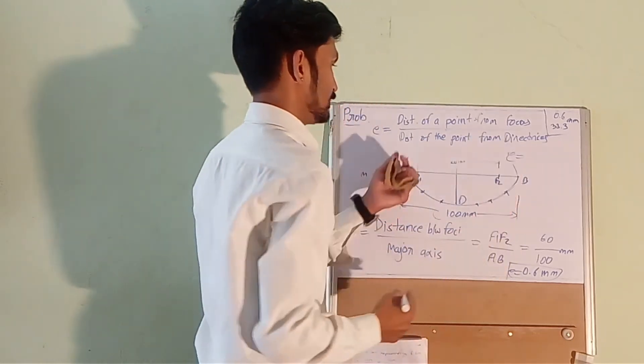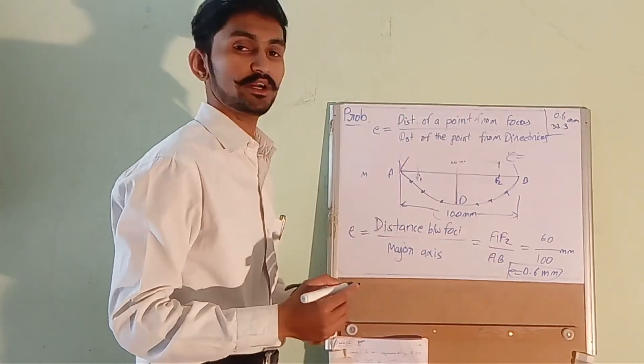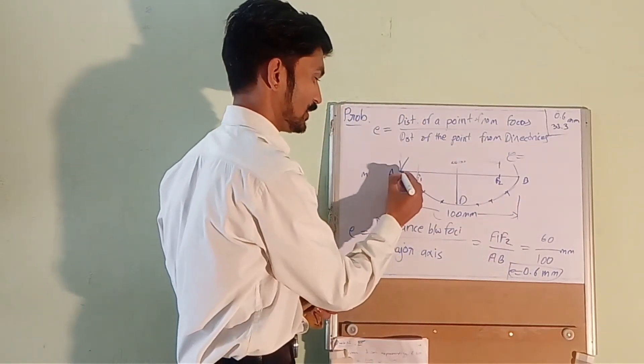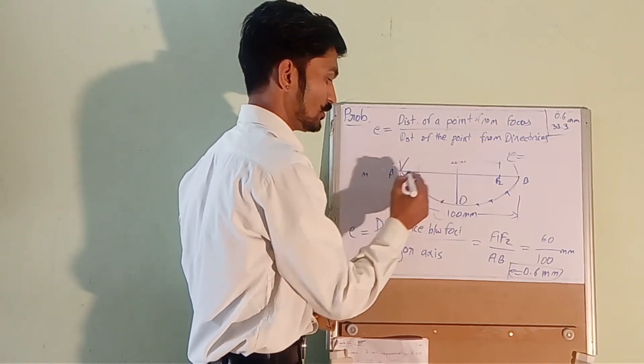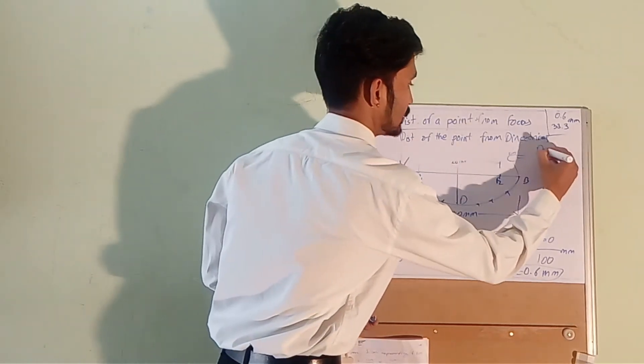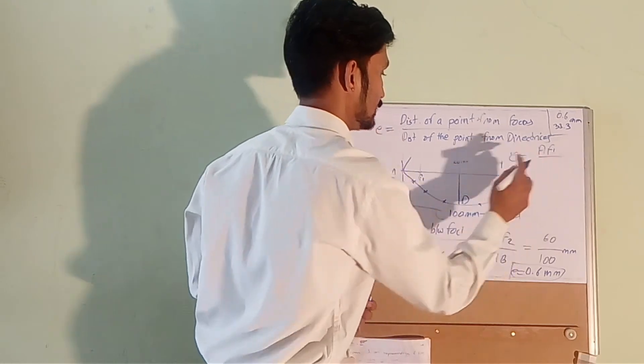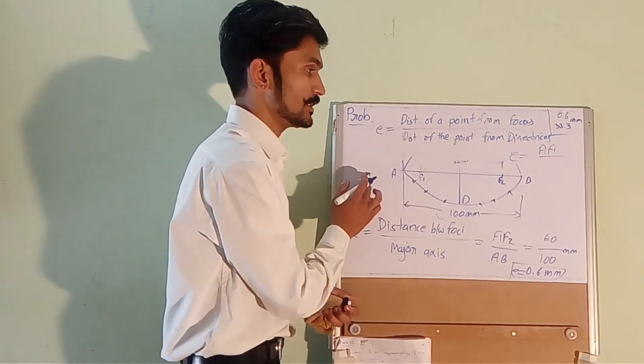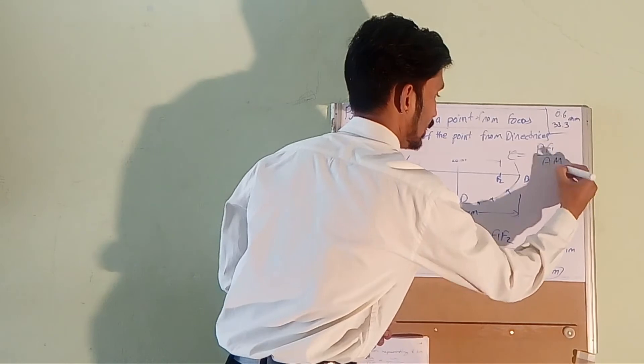So from here, distance of the point, let's say this point is F1A. So the distance of A from F1 is AF1 and distance of point A from the directrix M is AM.